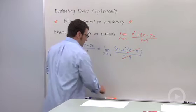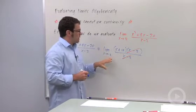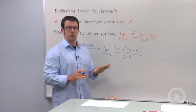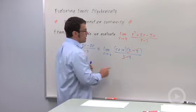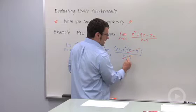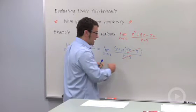we can cancel these two when evaluating the limit, because we don't care what happens at x equals 2. We care what happens near x equals 2. So near x equals 2, these two guys are always going to be the same value. And so we can cancel them.